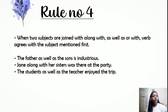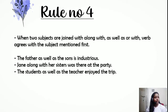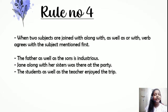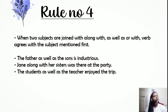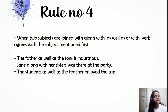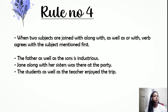Rule four: when two subjects are joined with 'along with,' 'as well as,' or 'with,' the verb agrees with the subject mentioned first. This is the opposite of the previous rule. For example, 'the father as well as the sons is industrious' — although 'sons' is nearer to the verb, we look at the first subject mentioned, which is 'father,' so we use 'is.' Similarly, 'Jane along with her sisters was there at the party.'